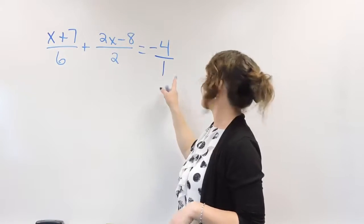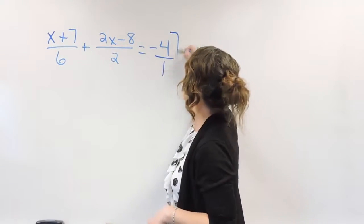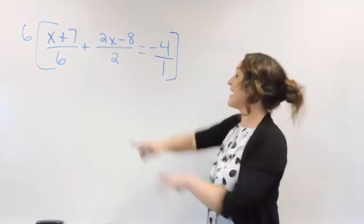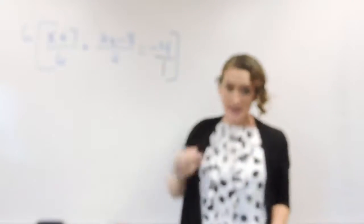So common denominator out of a 1, 2, and a 6 is a 6. So what we need to do is we need to multiply the entire equation by a 6.